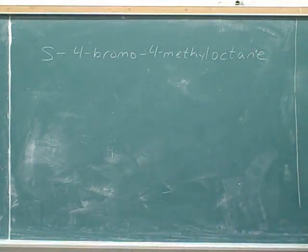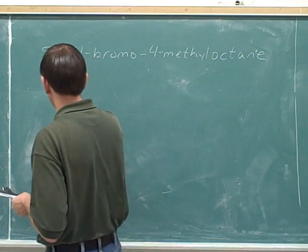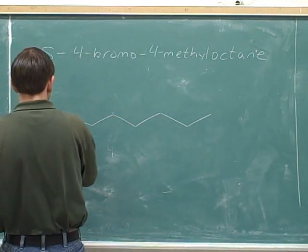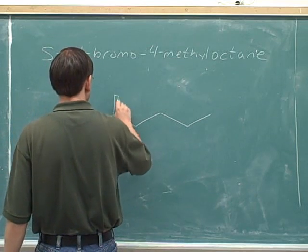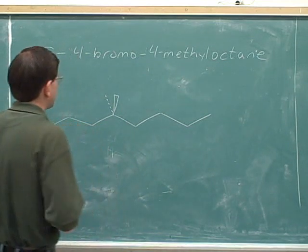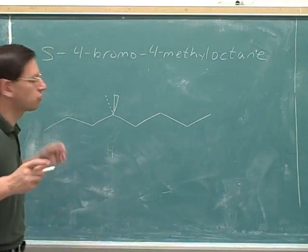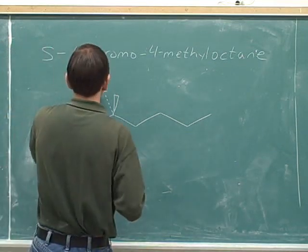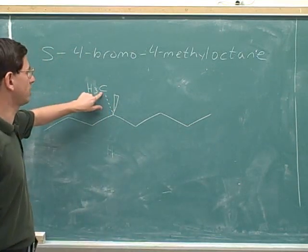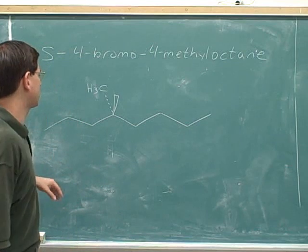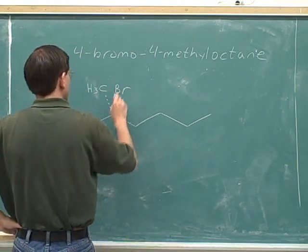Draw the next molecule. Octane has eight carbons, and finding the number four carbon, you can put a wedge and a dash on that. On one we're going to put the bromine and on one we're going to put the methyl group. Just take a guess — it's probably best to guess that you're going to put the methyl group on the dash, because the methyl group is likely going to end up being the lowest priority. It's usually easiest to guess that the lowest priority is going to be pointing away from you. So here would be the bromine on the wedge.